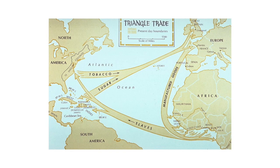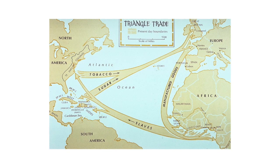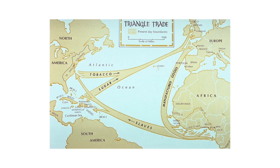Between 1600 and 1800, about one million Europeans came to America. In that same 200-year span, about 2.5 million Africans were brought here by force. So in many colonies, there were more slaves than free people.